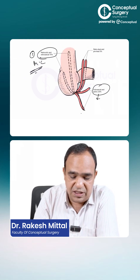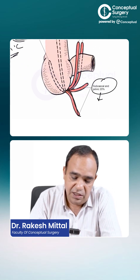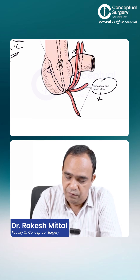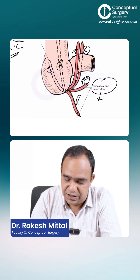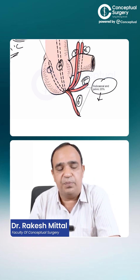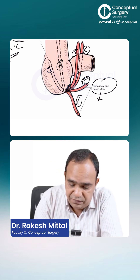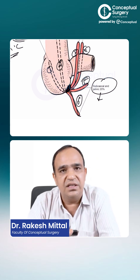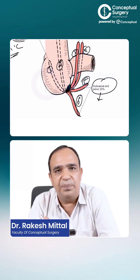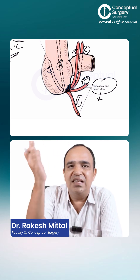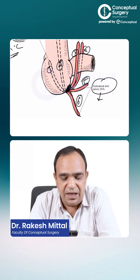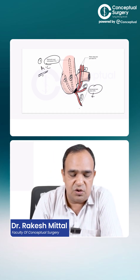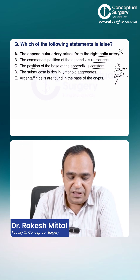The base of the appendix is constant. In this diagram you can see six positions of the appendix, but all of them share the same base — the base is constant. It is the direction of the tail that decides the position, not the base.